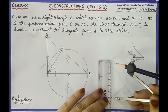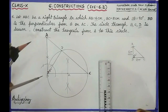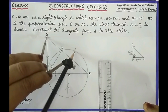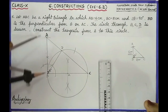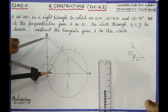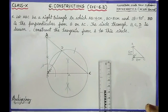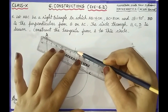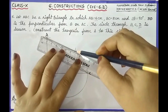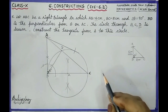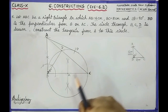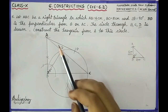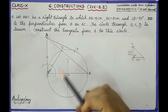Take the compass and adjust it to 6 cm radius. From point A, cut the circle with this radius — this gives us another point at 6 cm from A. Join this point to A. Let this point be P. So AB and AP are the two tangents from point A to the circle.